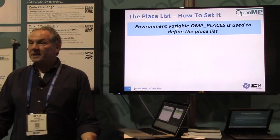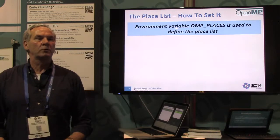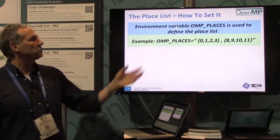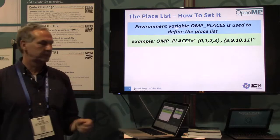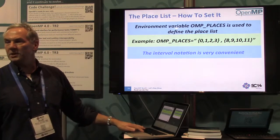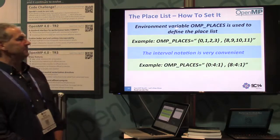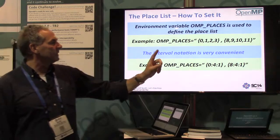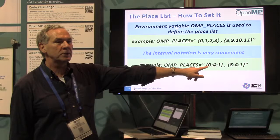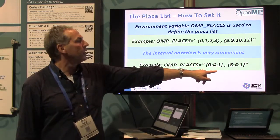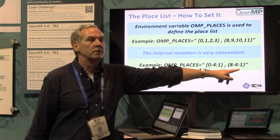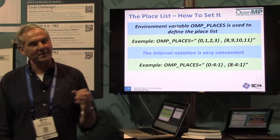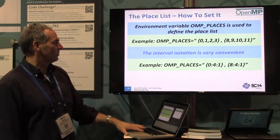Using OMP_PLACES, you set your place list — in this case two places, each consisting of four elements. The interval notation applies here as well. For example, the interval notation with stride means 0,1,2,3 in the first place and 8,9,10,11 in the second, because this is the count with a stride. Don't make a mistake there — you'll have a different place list than you think. The stride is critical: it's the increment, not the last element.